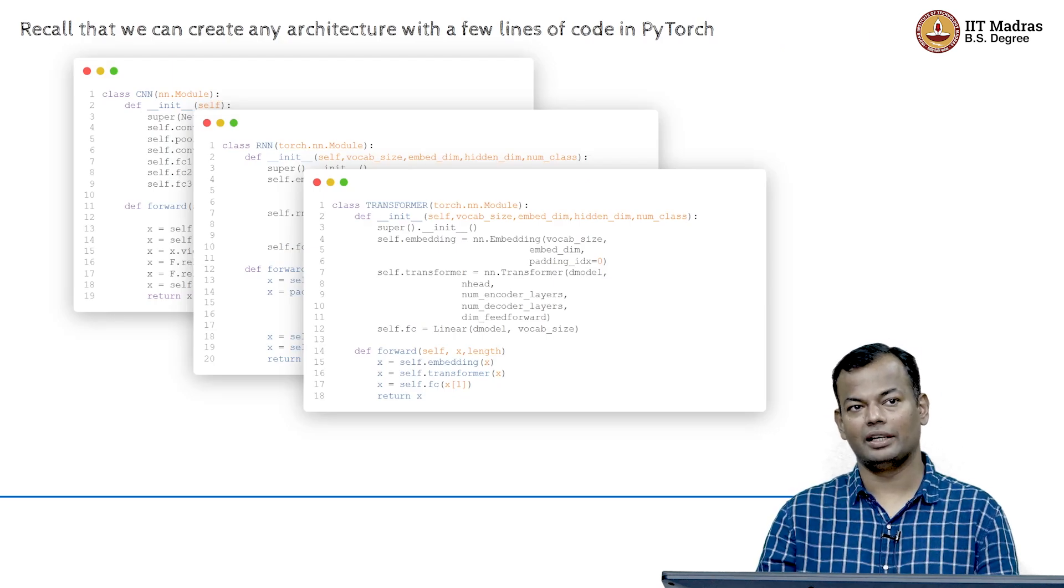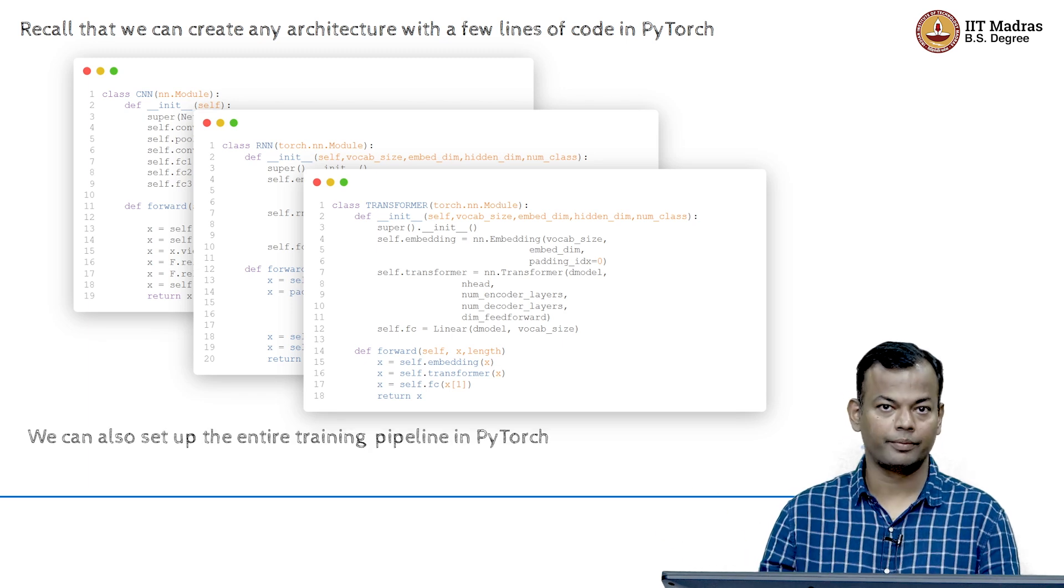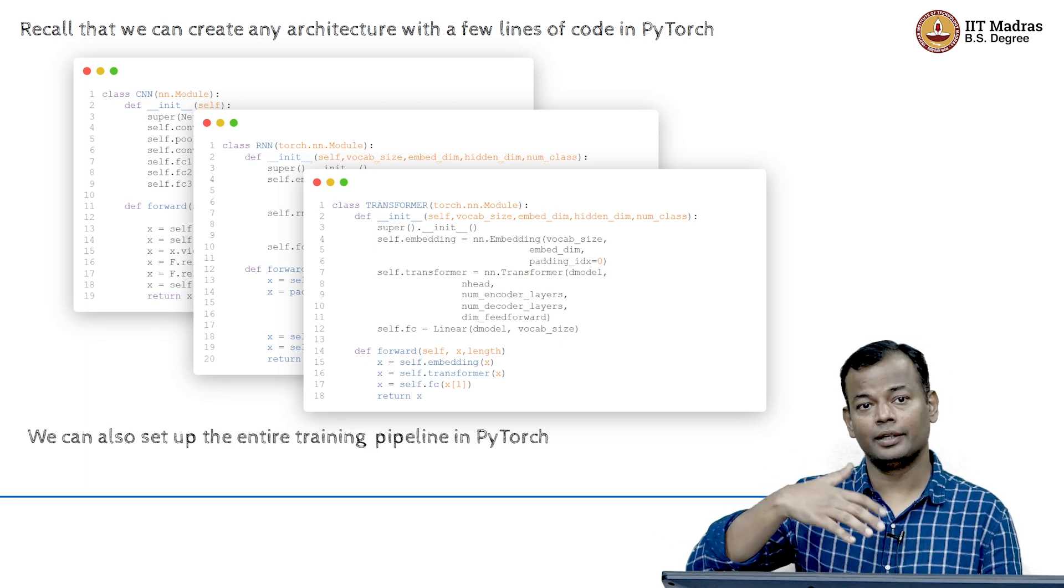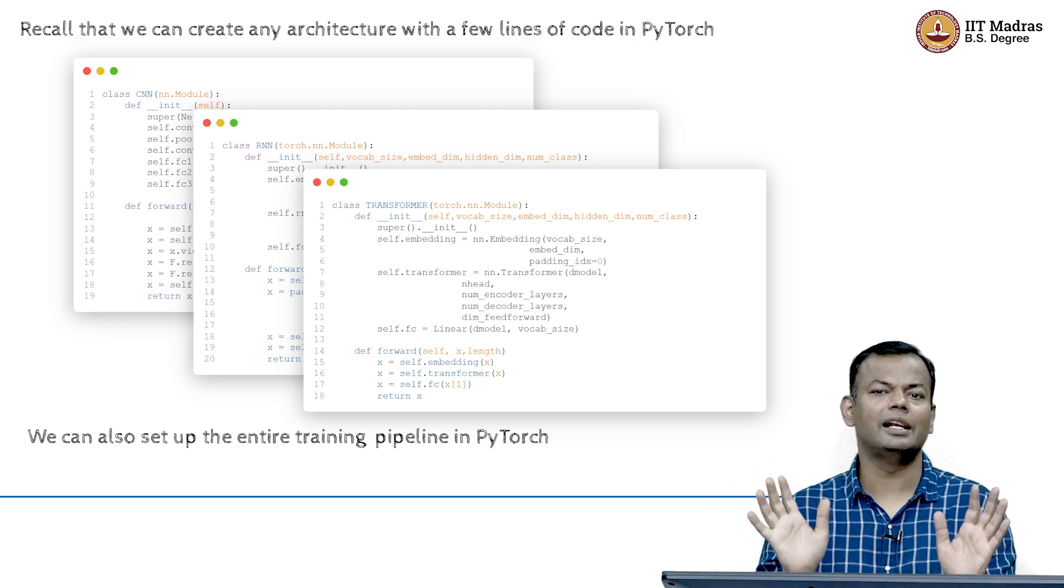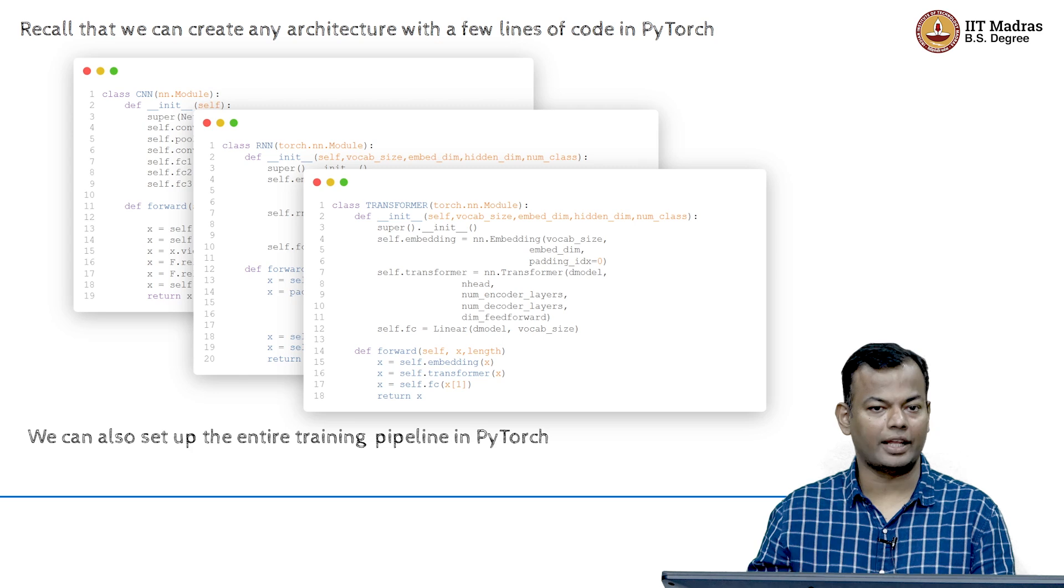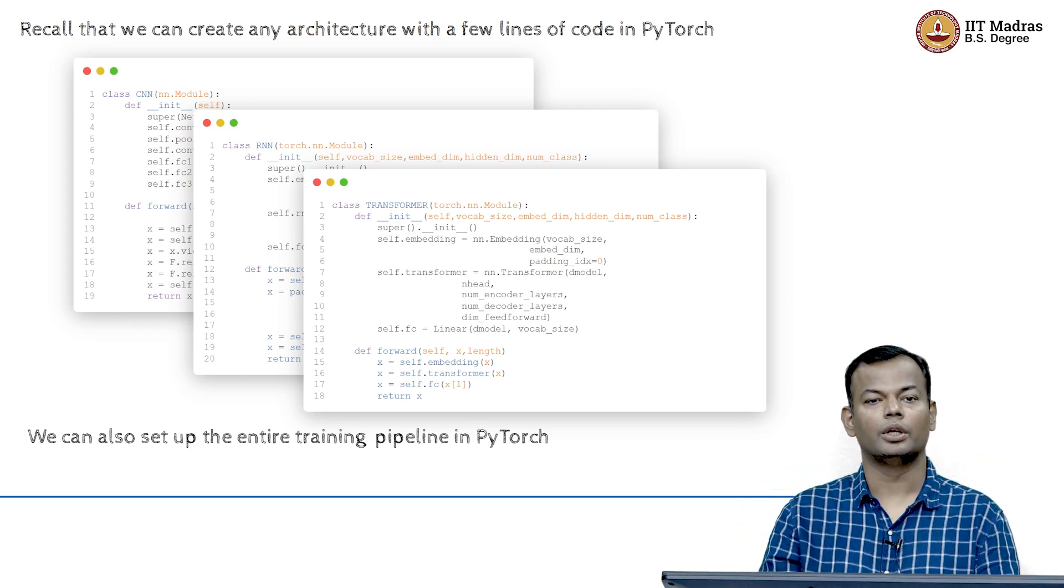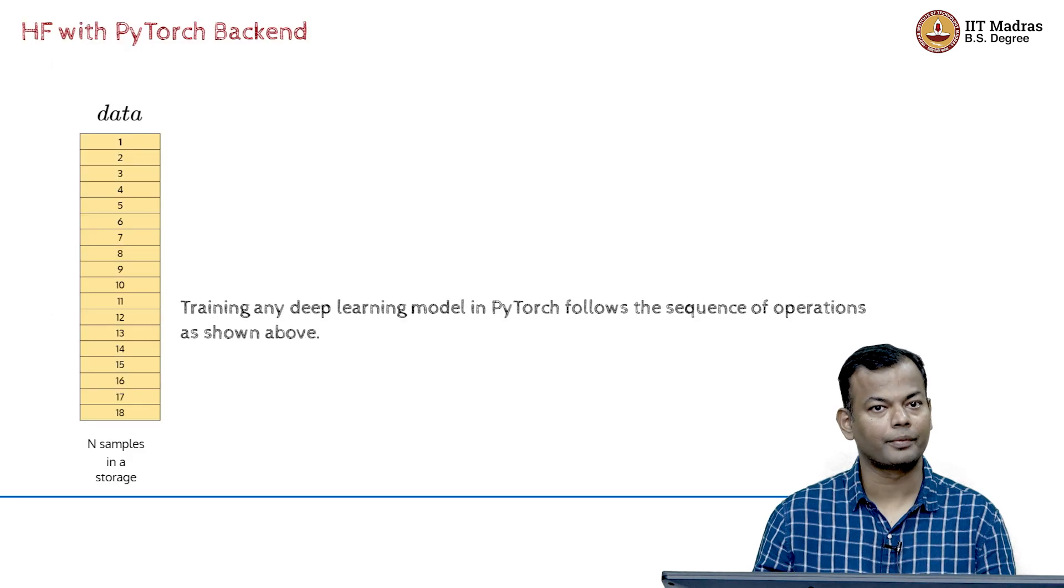And then we had also seen this earlier, that we can create any architecture with a few lines of code in PyTorch. You could create the GPT model that we saw, at least a scaled-down version of it with very few lines of code. Not even a scaled-down, I mean actually the full GPT model. You could actually write it in PyTorch with very few lines of code.